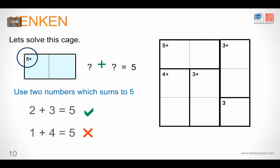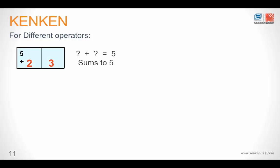Now let's look at all the different operators that you can use in a KenKen puzzle. We already saw five plus. This one here has one minus. What does this mean? It means you have to subtract two numbers and the answer has to be one. So two and one is our answer. So two minus one gives you one.